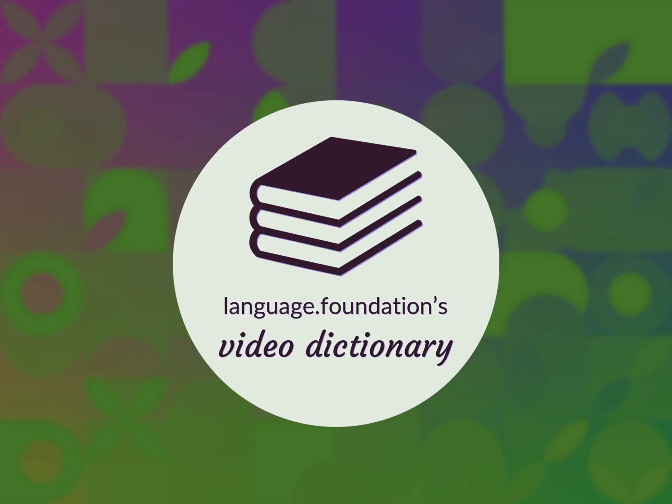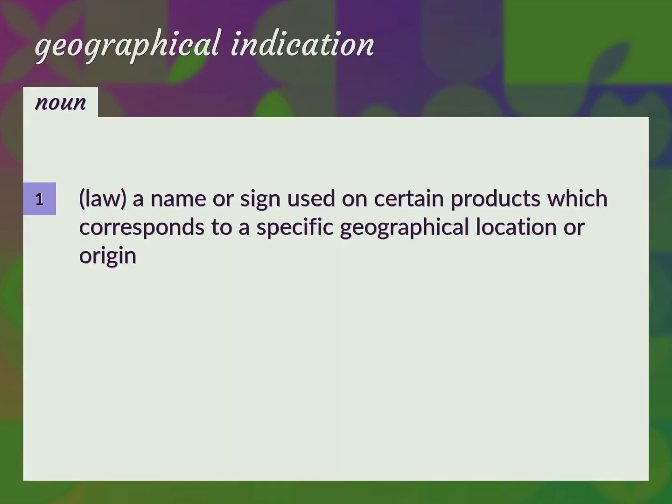Language.Foundation's Video Dictionary, helping you achieve understanding. GI: a name or sign used on certain products which corresponds to a specific geographical location or origin.